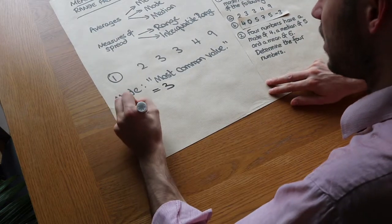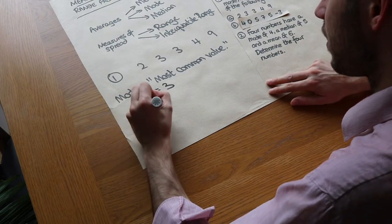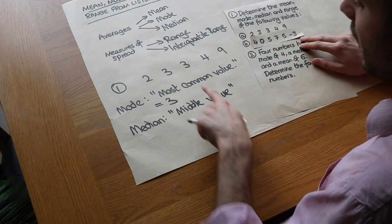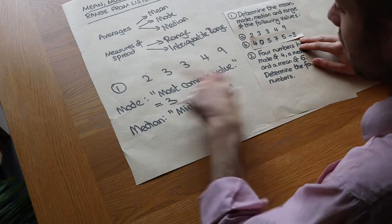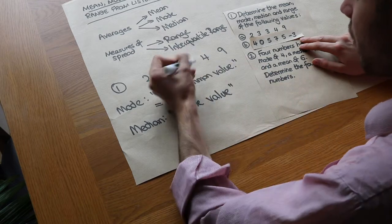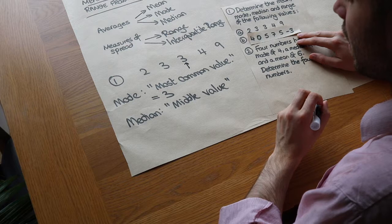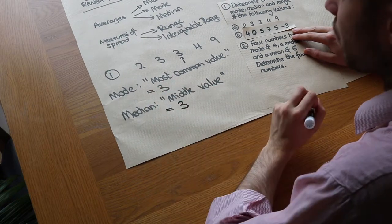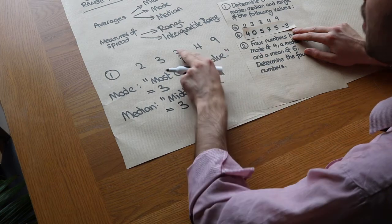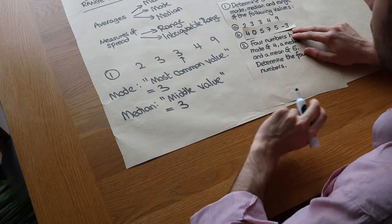Now the median is the middle value. To find the middle value you first need to put the values in ascending order. They are in this particular case, so we look at the middle value and we can see the middle value is 3. We'll see what happens in a second if there isn't a middle value because there's an even number of items.